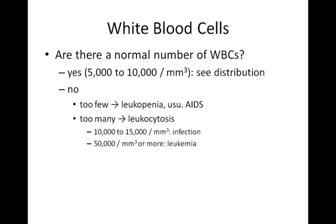If the white blood cell count is lower, that's a serious illness such as AIDS, in which case the white blood cells are being destroyed. It's also possible to have a normal total white blood cell count but an odd distribution of white blood cell types because of disease. So we need to look at the percentages of each WBC type as well. In particular, we're interested in neutrophils, which primarily respond to bacterial infections; lymphocytes, which are mostly elevated in viral infections; and eosinophils, which respond to allergens or parasites.